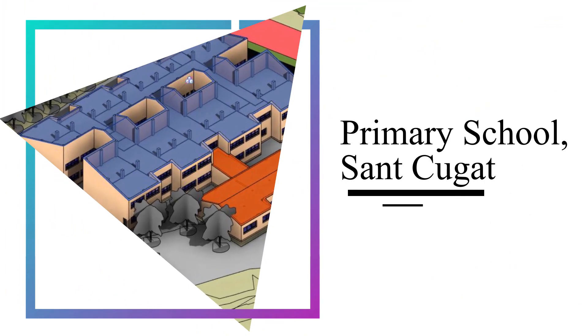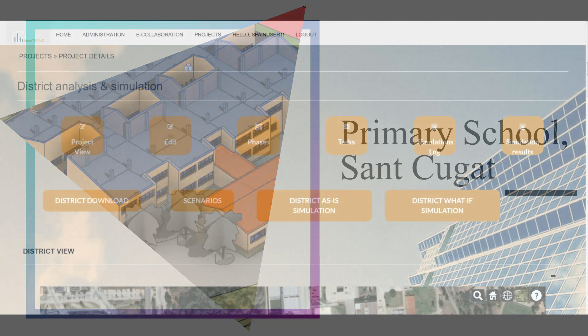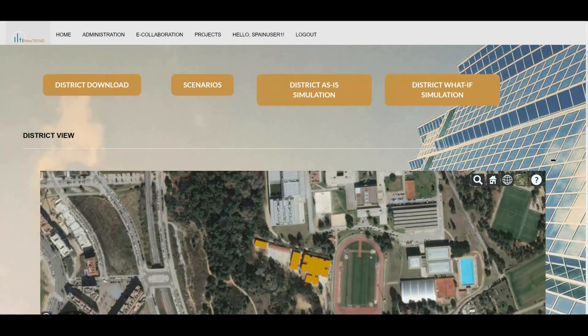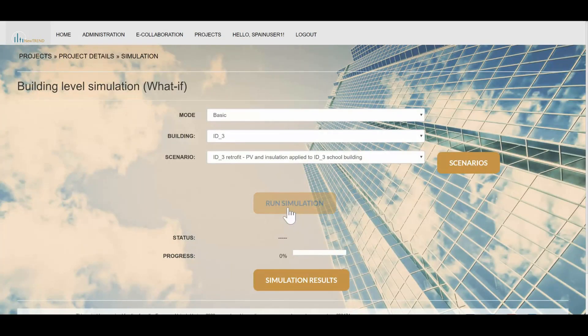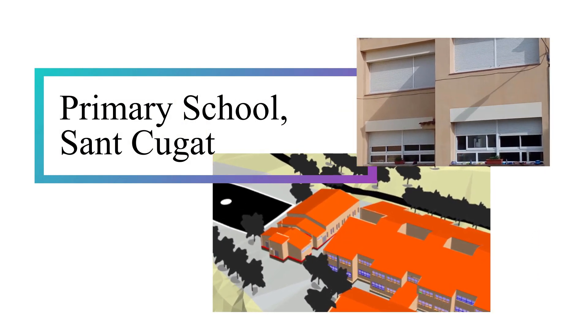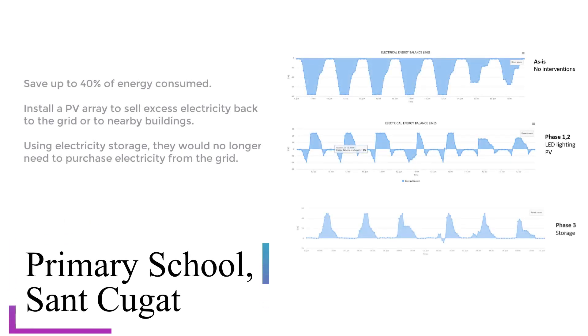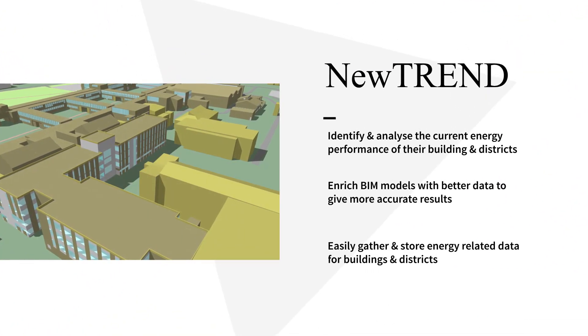In Sant Cugat, Spain, the local authority wanted to plan retrofit measures for a school and analyze the area as a group of buildings. Using the NewTrend platform, they identified that they can save up to 40% of energy consumed, they can install a PV array to sell excess electricity back to the grid or to nearby buildings, and using electricity storage they would no longer need to purchase electricity from the grid.